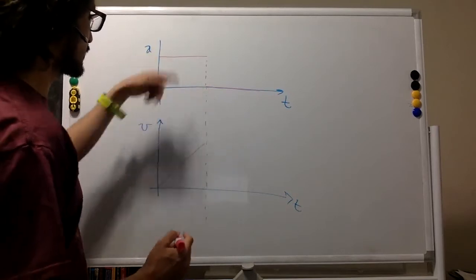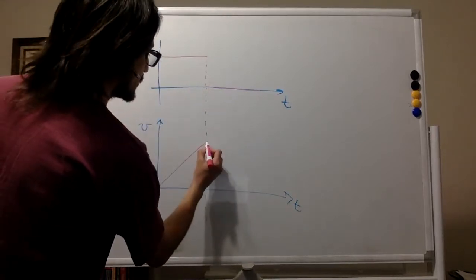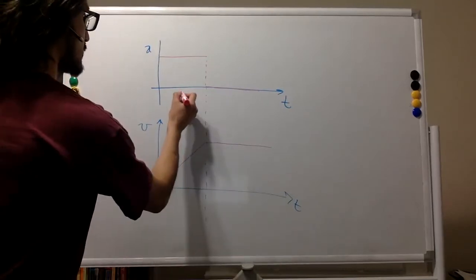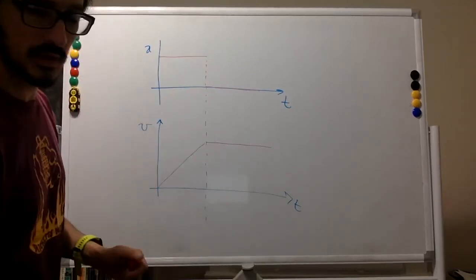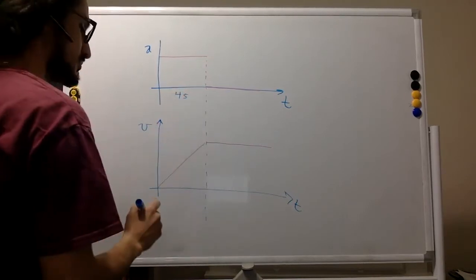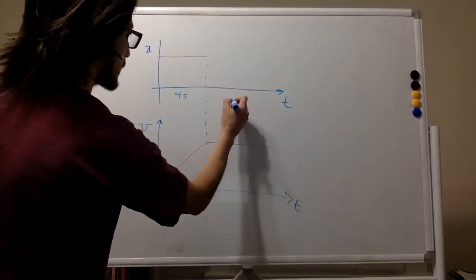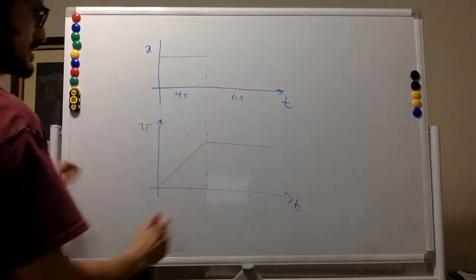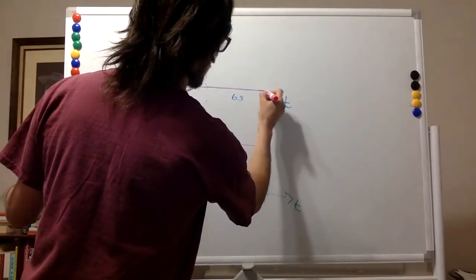And after that the acceleration is zero so the velocity is going to remain constant. This is four seconds. You can do the whole thing in 10 seconds, so this means that the second section is six seconds.